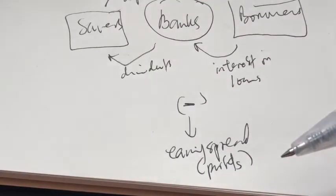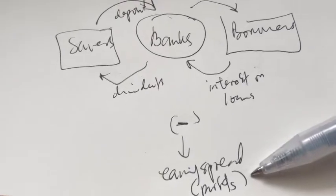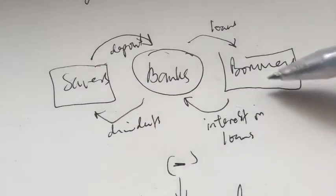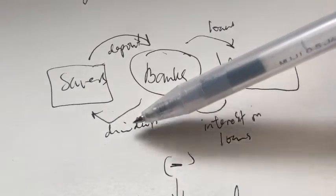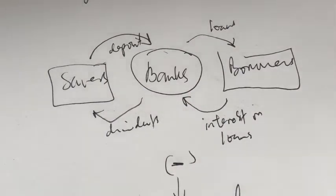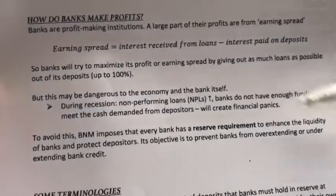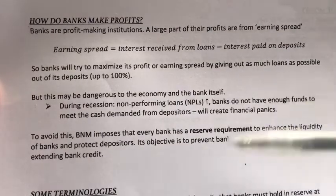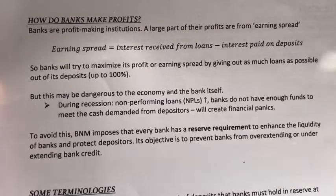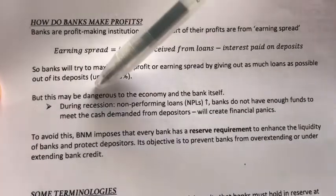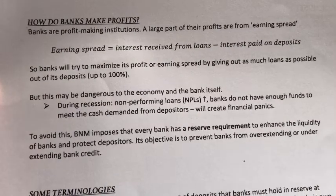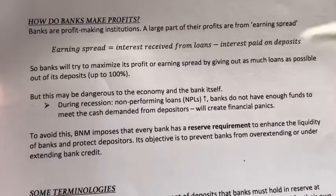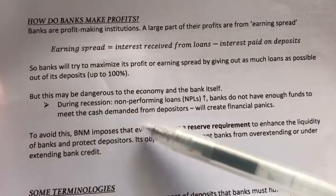Just like any profit-making institution, banks want to maximize their profits, so they want to give out as much loans as possible to as many borrowers as possible. However, this practice is dangerous, because during recession especially, non-performing loans would increase, meaning people may have trouble paying back their loans. People may be losing jobs and don't have enough money, so they may end up defaulting on loans. Therefore, the banks do not have enough funds to meet the cash demanded by depositors.